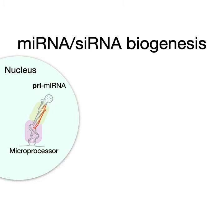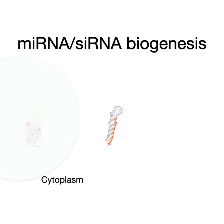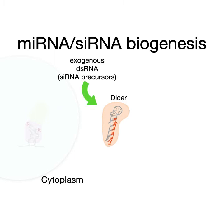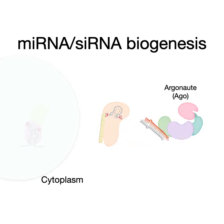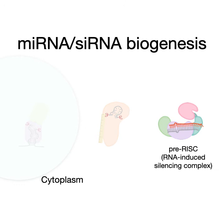This primary miRNA binds to a complex called the microprocessor, which chops it into a shorter but still hairpin-shaped structure that gets exported to the cytoplasm. Here, it needs to get processed before it can enter Argonaute, so it goes to a protein called Dicer. This is also where siRNA precursors come in. Dicer serves as a molecular ruler and scissors in one — it measures that hairpin duplex and cuts it into a size that Argonaute likes, about 20 nucleotides long with overhanging ends. That gets loaded into Argonaute to form the pre-RNA-induced silencing complex, or pre-RISC.